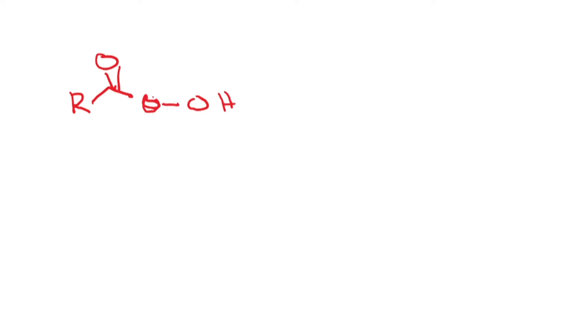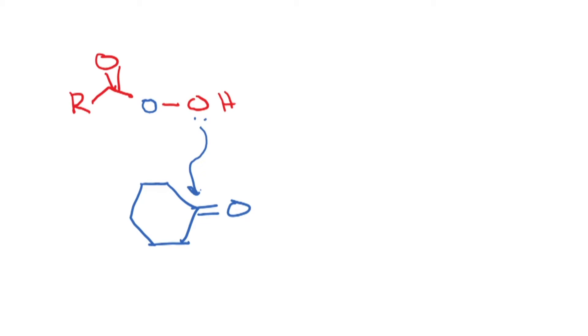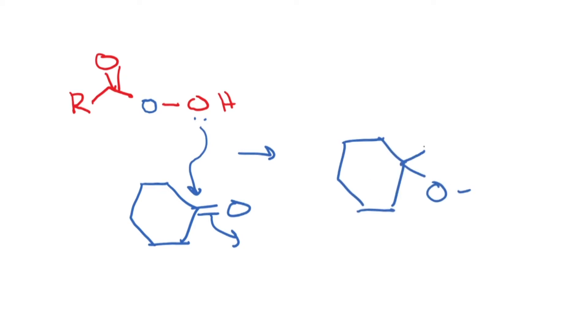Let us look at the mechanism. The important player here is the peracid, which we have already studied during epoxidation reactions. The peroxy acid is a carboxylic acid with an extra oxygen — a peroxide attached. When it reacts with a ketone, there is attack and formation of the tetrahedral intermediate.